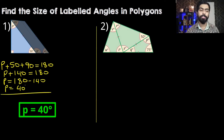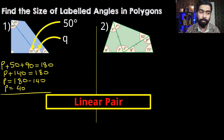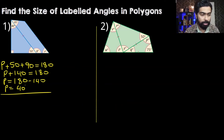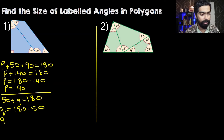We have found the value of P. Now we can find the value of Q. Q and the 50 degrees form a linear pair, and in a linear pair the angles add up to 180 degrees, which is a straight line. So we have 50 plus Q equals 180 degrees, therefore Q is equal to 130 degrees.